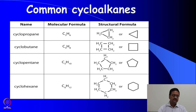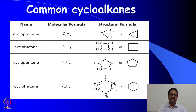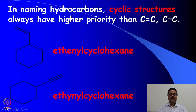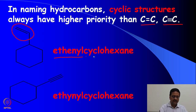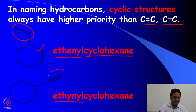When learning about cyclic alkanes there are commonly encountered examples such as cyclopropane, cyclobutane, cyclopentane, cyclohexane, and so on. These are very common cyclic compounds in organic chemistry. Cyclic structures always have higher priority over C=C or C≡C bonds. So this compound should be named with ethinyl as the substitution and cyclohexane as the parent. Similarly, ethinyl is the substitution and cyclohexane is the parent in the second example.